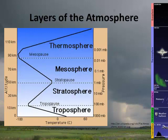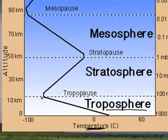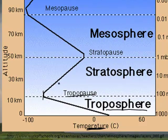Before we can truly understand thunderstorms, we need to understand a little bit about the atmosphere. The atmosphere has several layers. The first layer is called the troposphere — the lowest level. As you get higher, the temperature gets lower. At about 10 kilometers above Earth, the temperature flattens out, and this is called the tropopause.